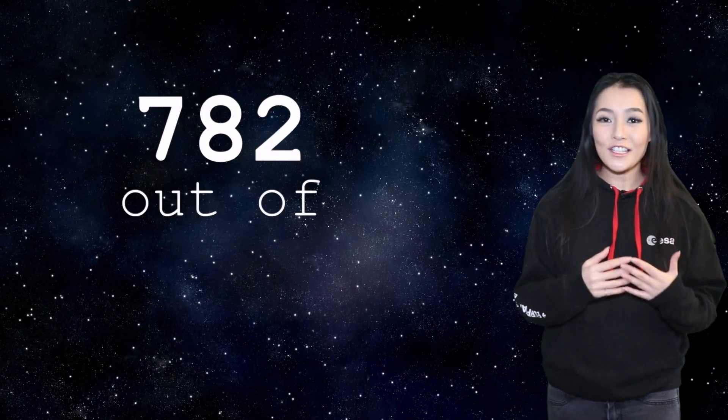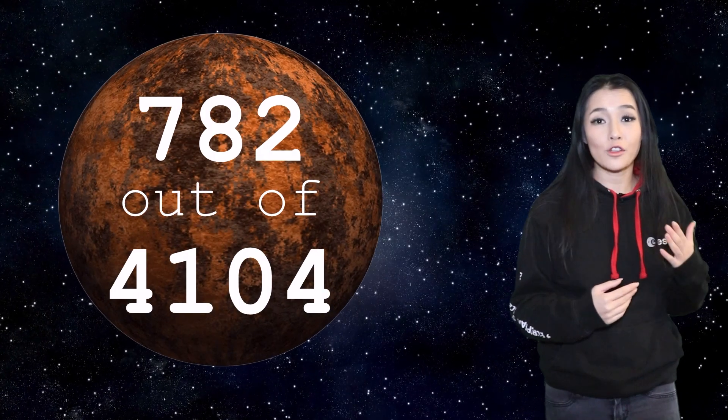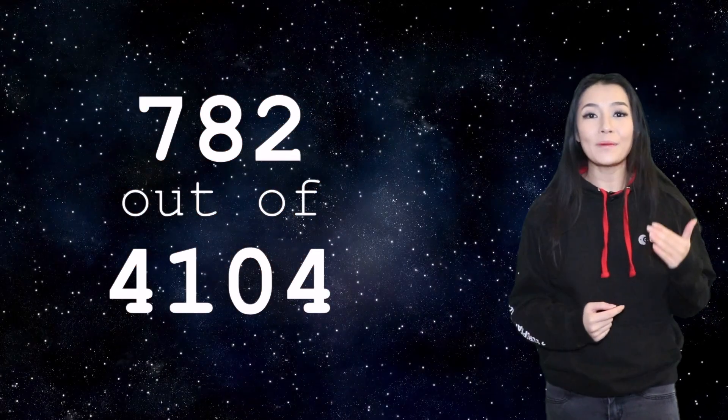So far 782 out of 4,104 exoplanets have been found this way. About 20%, but under IAU's current definition all of these exoplanets cannot really be called planets.